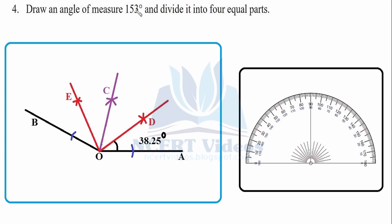Question 4: Draw an angle of measure 153 degrees and divide it into four equal parts. Use your protractor, point it at O, and go from 0 to 153 degrees. Connect that point with the origin using a ruler. To divide into four equal parts, first make a semicircle and get two points on segments B and A. From those points intersect to get point C, dividing 153 degrees into two equal parts.